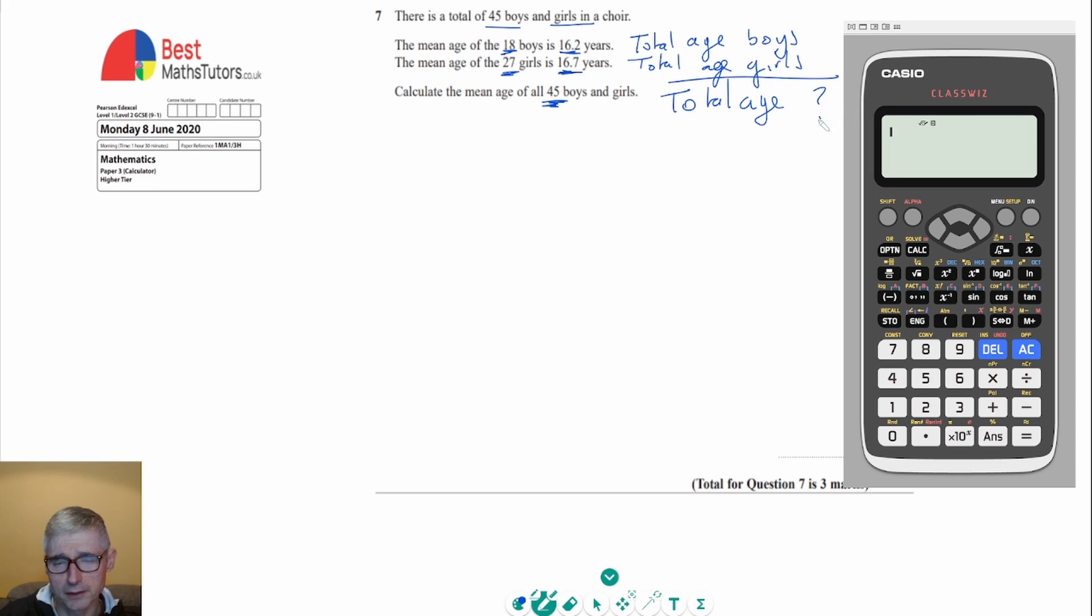We'll find out what that is going to be, and then we can find out what the mean is by dividing the total age that we get by 45, because the number of boys and girls is 45.